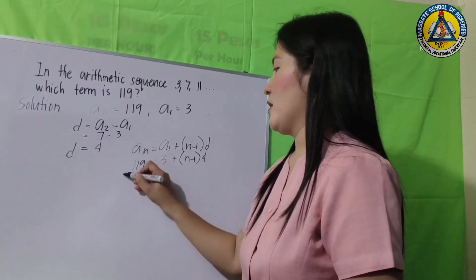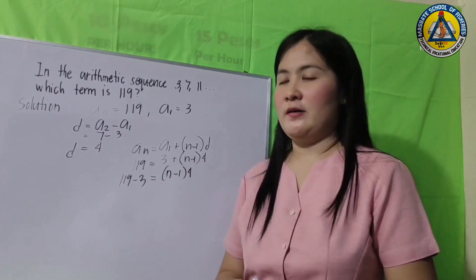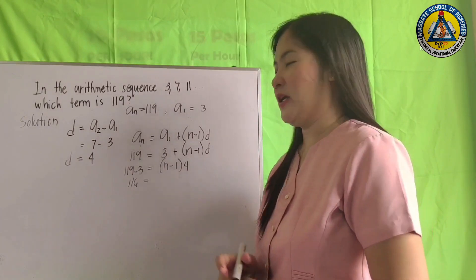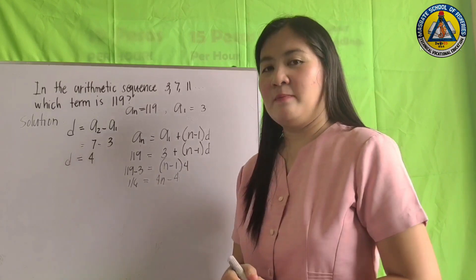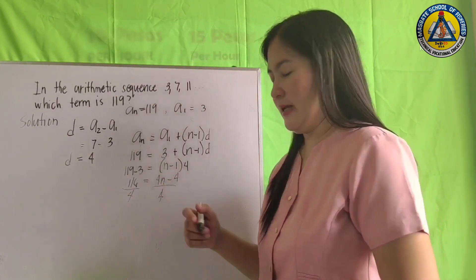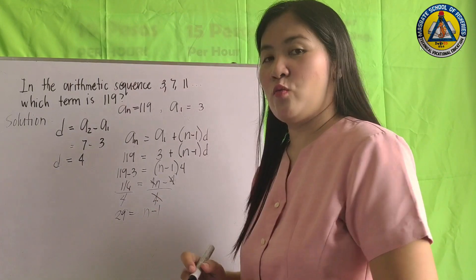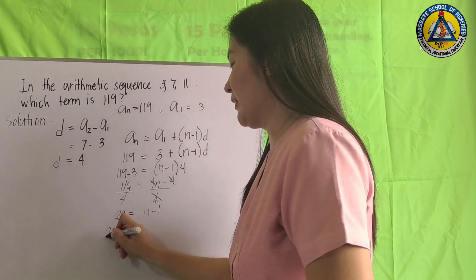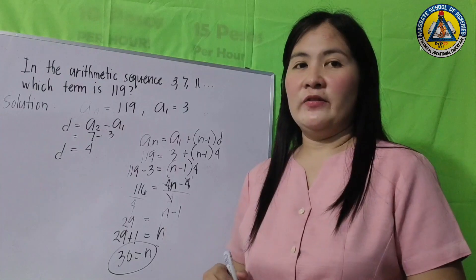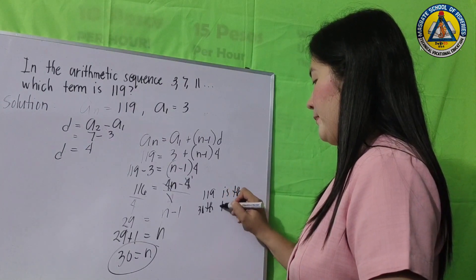Simplifying: 119 - 3 = 116. Applying the distributive property: 116 = 4n - 4. Dividing both sides by 4: 29 = n - 1. Simplifying: 29 + 1 = n, therefore n = 30. Therefore, 119 is the 30th term of the sequence.